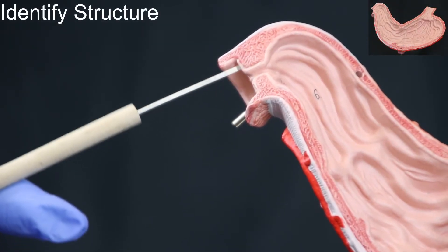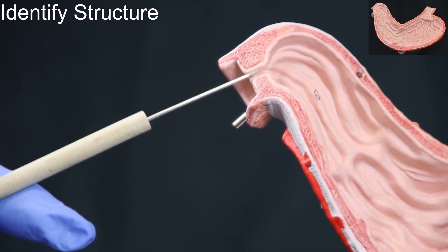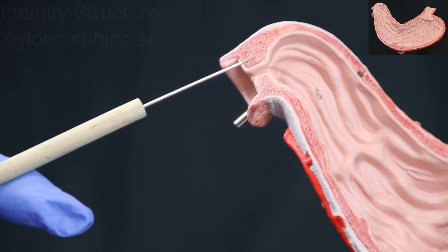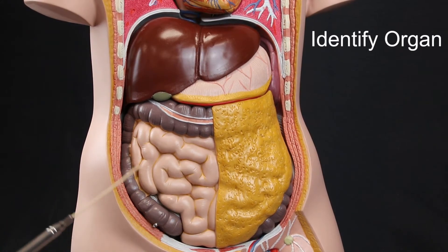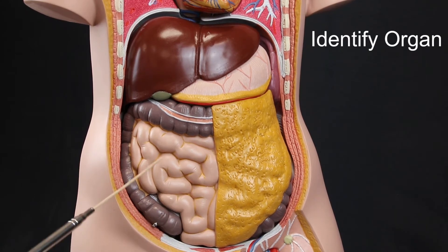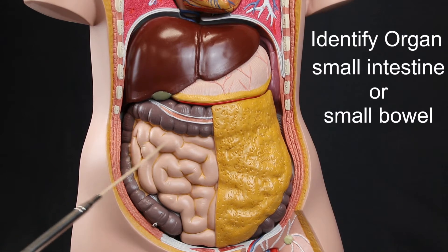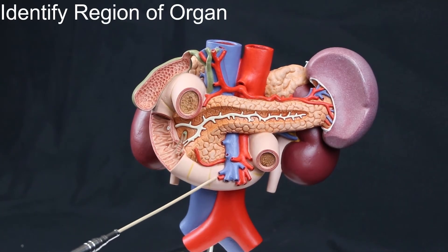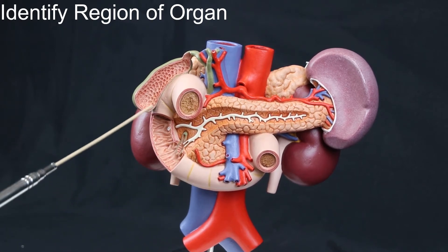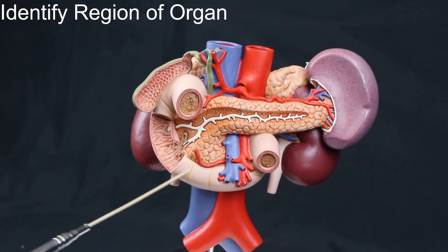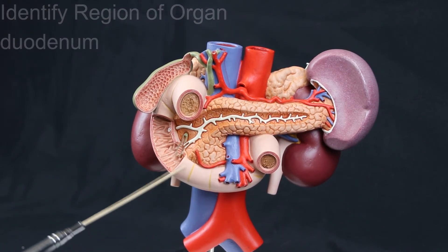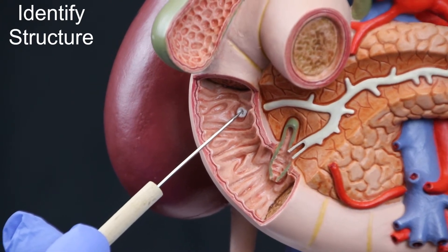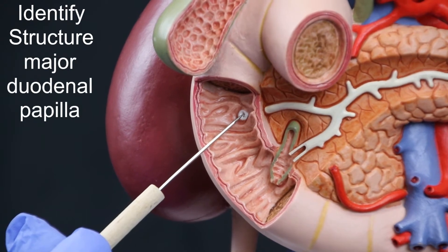I.D. Structure: Pyloric sphincter. I.D. Organ: Small intestine, or small bowel. I.D. Region of organ: Duodenum. I.D. Structure: Major duodenal papilla.